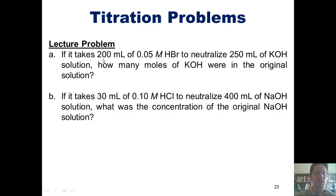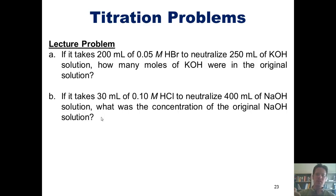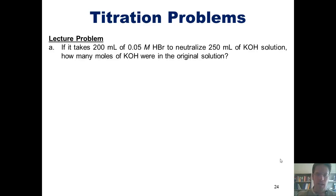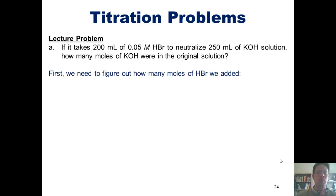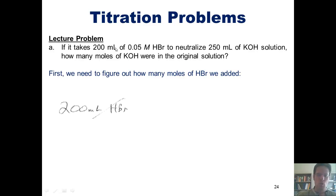Let's look at some problems. Imagine if it takes 200 milliliters of 0.05 molar HBr to neutralize 250 milliliters of KOH — how many moles of KOH were in the original solution? And another example: if it takes 30 milliliters of 0.1 molar HCl to neutralize 400 milliliters of sodium hydroxide, what was the concentration of the original sodium hydroxide? Let's tackle part A. We need to figure out how many moles of HBr we added: 200 milliliters of 0.05 molar HBr.